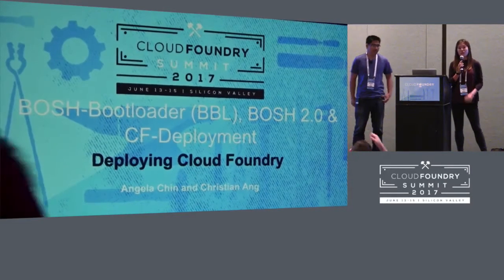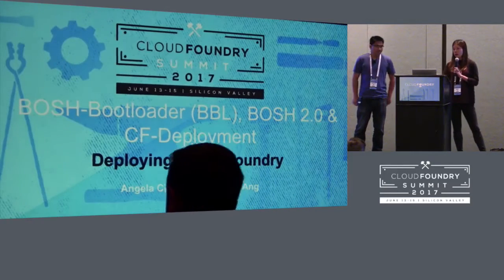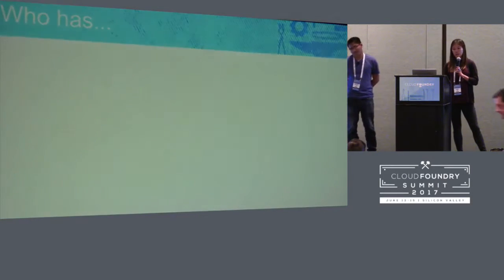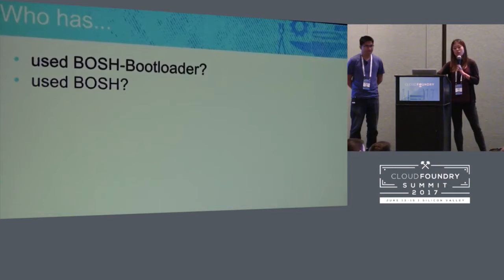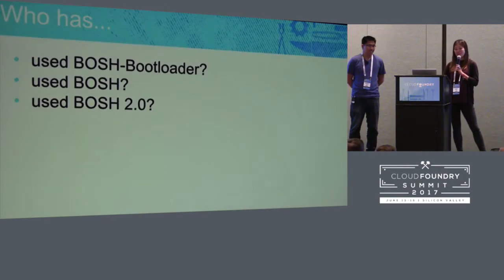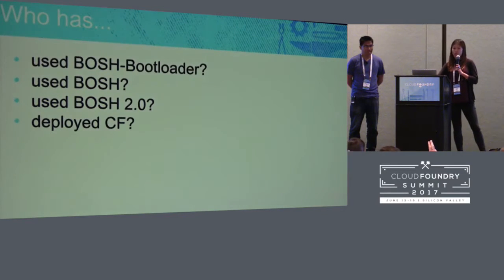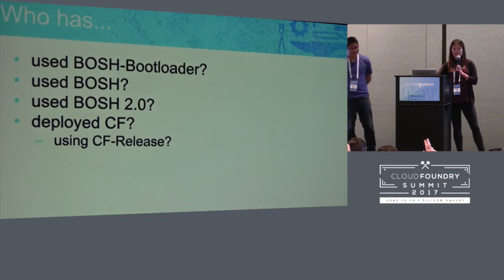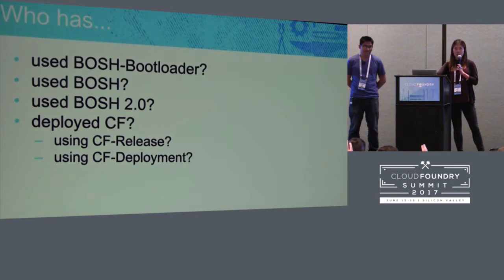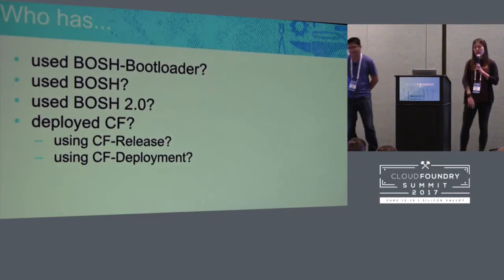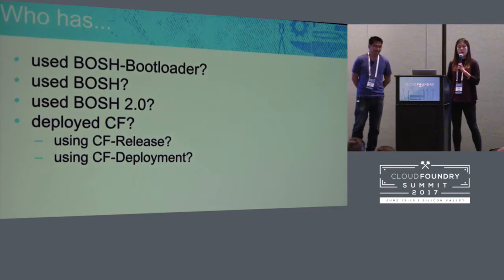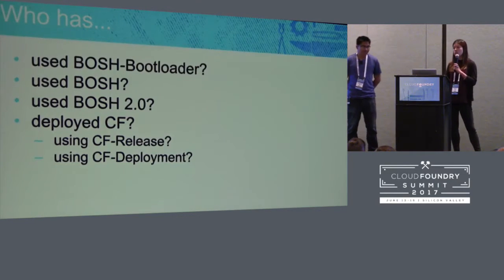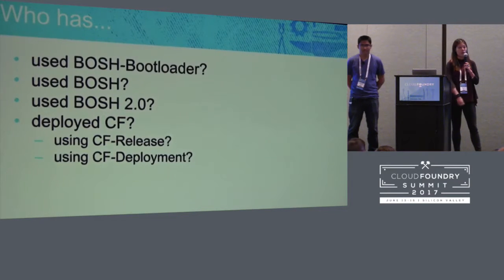So a set of new tools and features that core Cloud Foundry teams have been working on in the past year. But before we get into what all these tools are, I just want to take a quick temperature of the room. Who here has used Bosch Bootloader before? How many of you have used Bosch? Used Bosch 2.0? Deployed CF? Used CF release? And how about using CF deployment? So it seems like most people have used one tool or another, with a pretty even distribution. Hopefully by the end of the talk, no matter where you started, you'll be equipped to go from nothing to deploying a fully working Cloud Foundry in a matter of a couple of hours.